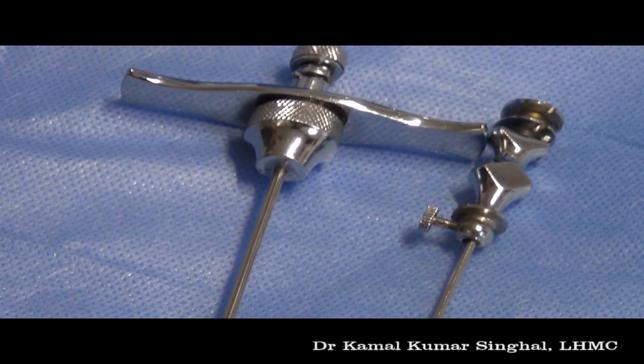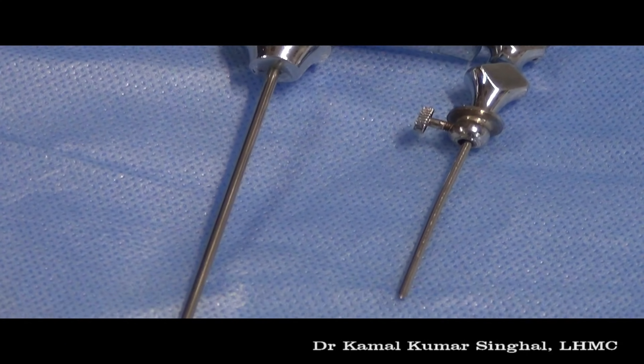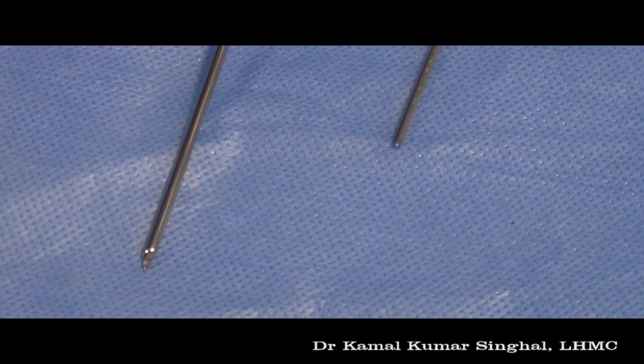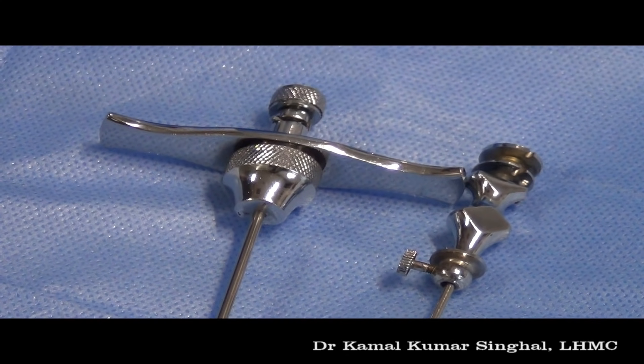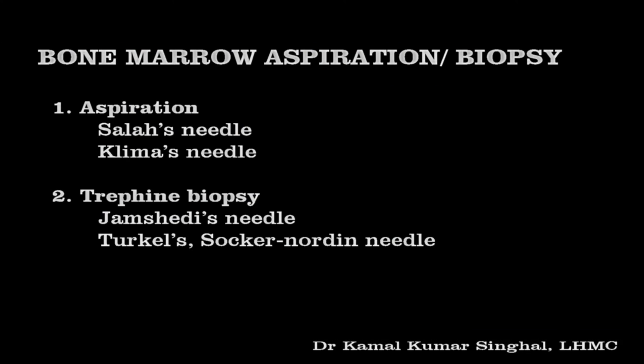A bone marrow biopsy needle can be easily differentiated from a bone marrow aspiration needle by a stout handle and a thick, strong needle. There are two kinds of bone marrow aspiration needles: the Salah's needle and the Klima's needle. The two types of trephine biopsy needles are the Jamshidi needle and the Turkel's needle.